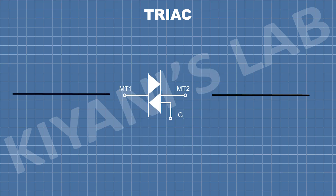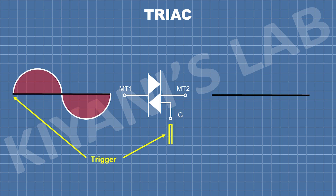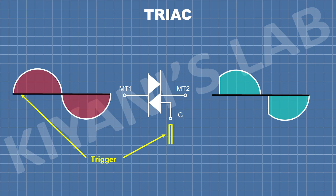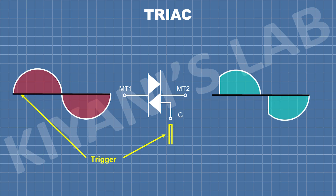When we give an AC signal at the input of a triac, there is no signal at the output until we give a trigger at the gate. When we trigger the gate, we will have the output signal. The output signal of the triac will change by the gate triggering angle.